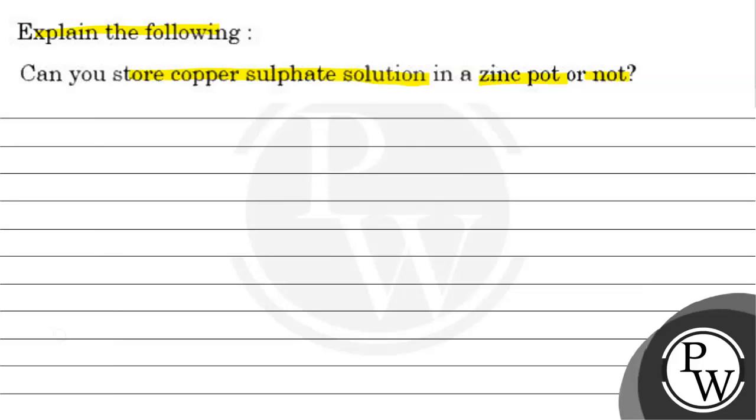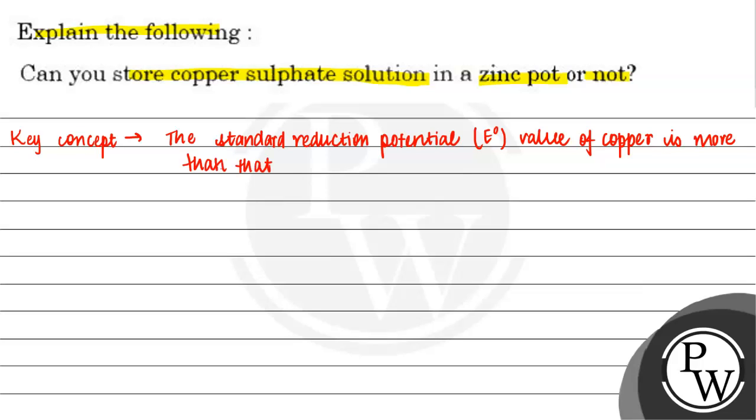Let us write the key concept of the question. Key concept of this question will be the standard reduction potential. E0 value of copper is more than that of zinc. So, it will get reduced more easily.